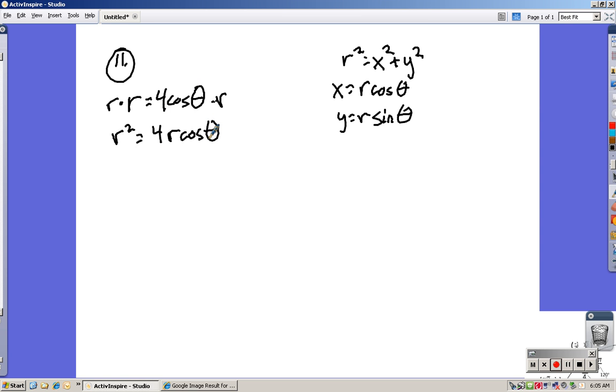r squared is the same as x squared plus y squared. 4 r cosine theta is the same as x. So then there's that.